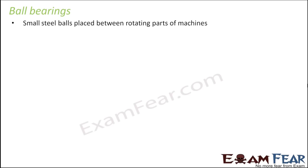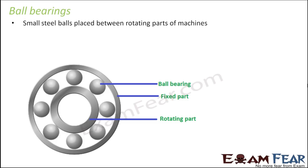Ball bearings are small steel balls placed between rotating parts of machines. The outer circle is the fixed part and the inside one is the rotating part. If there were no balls, the rotating part would rotate on the fixed part causing a lot of friction, heat, and energy wastage. So steel balls are placed between the two parts. As the inside part moves, these balls start rolling on both parts.